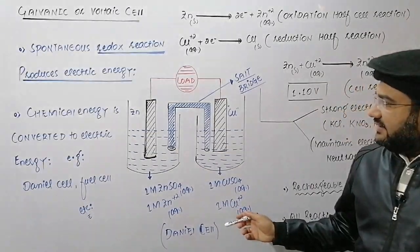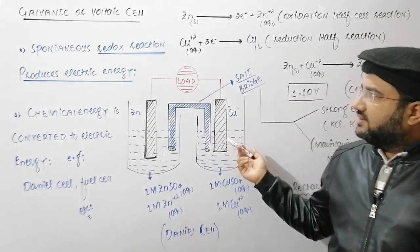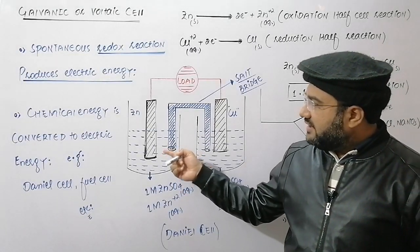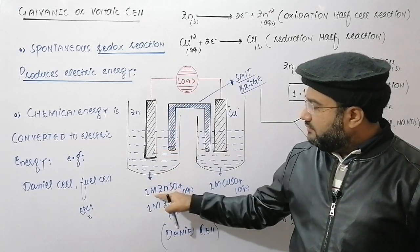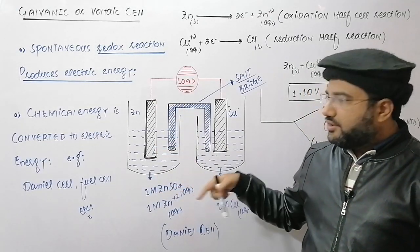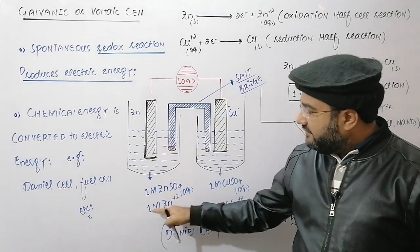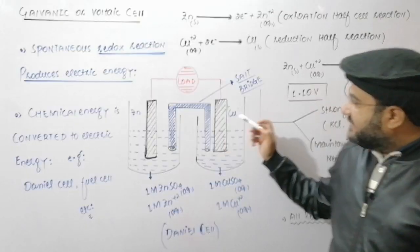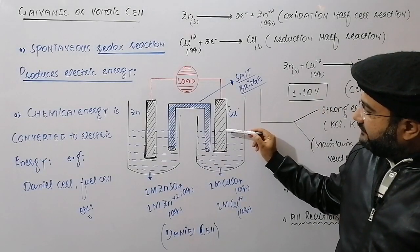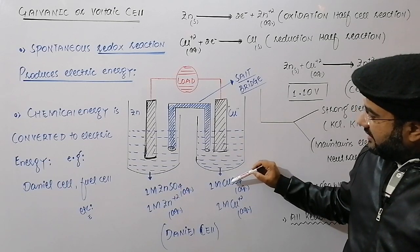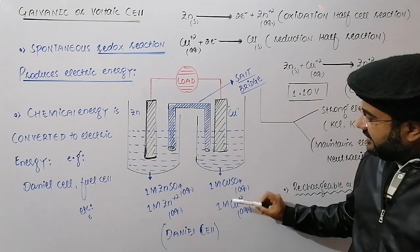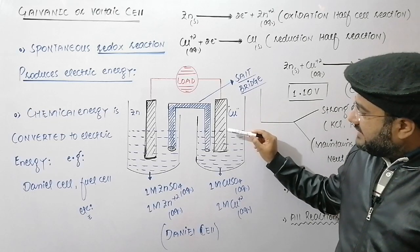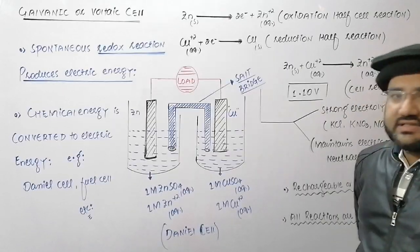The Daniel cell is also called the zinc-copper cell, because the Daniel cell consists of two halves. In the first half, a zinc plate is dipped in a one molar solution of zinc sulfate — that is, one molar aqueous Zn²⁺ ions. In the second half, the copper plate is dipped in a one molar aqueous copper sulfate solution, which contains one molar aqueous Cu²⁺ ions.